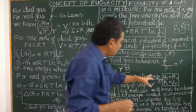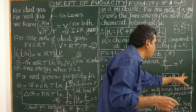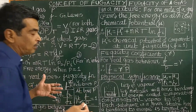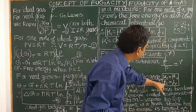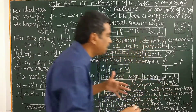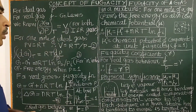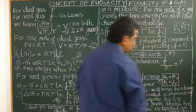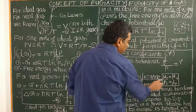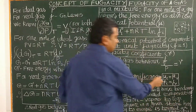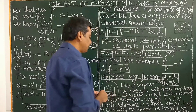At equilibrium, the chemical potential of liquid water is equal to the chemical potential of water vapour. Therefore, the fugacity of liquid water is equal to the fugacity of the vapour. That is, F(liquid) = F(vapour). Please remember: at equilibrium, the chemical potential of liquid water equals the chemical potential of water vapour, and therefore the fugacity of liquid water equals the fugacity of the vapour.